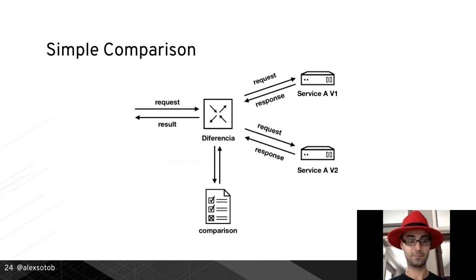There are two tools for tap compare: Differential and OpenDiffy. Differential is implemented in Go but integrates with Java, making it really fast and Kubernetes-friendly. It integrates fairly well with Prometheus, so regressions can be monitored by your monitoring system. Differential acts as a proxy — a request is sent to service A v1 and v2, both return responses, you compare them, and send the status to your monitoring system.